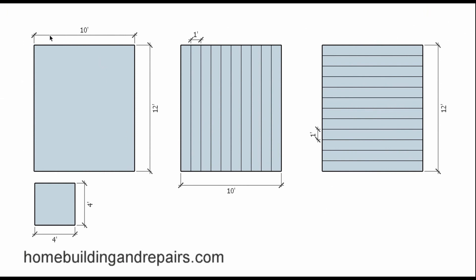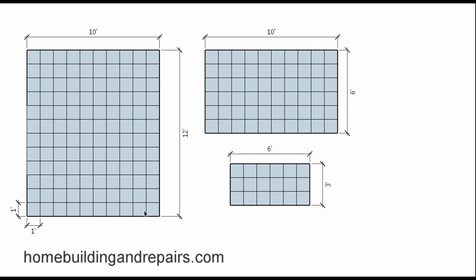Let's figure out some square footage. We have a 10-foot by 12-foot rectangle. Remember, to be a square it would need equal sides — like a 4-foot by 4-foot. This is a rectangle, but we can figure out square footage by creating little squares. If we draw one-foot lines across, we get 12 squares one way and 10 the other. 10 times 12 equals 120 — there would be 120 individual square feet on this plane.